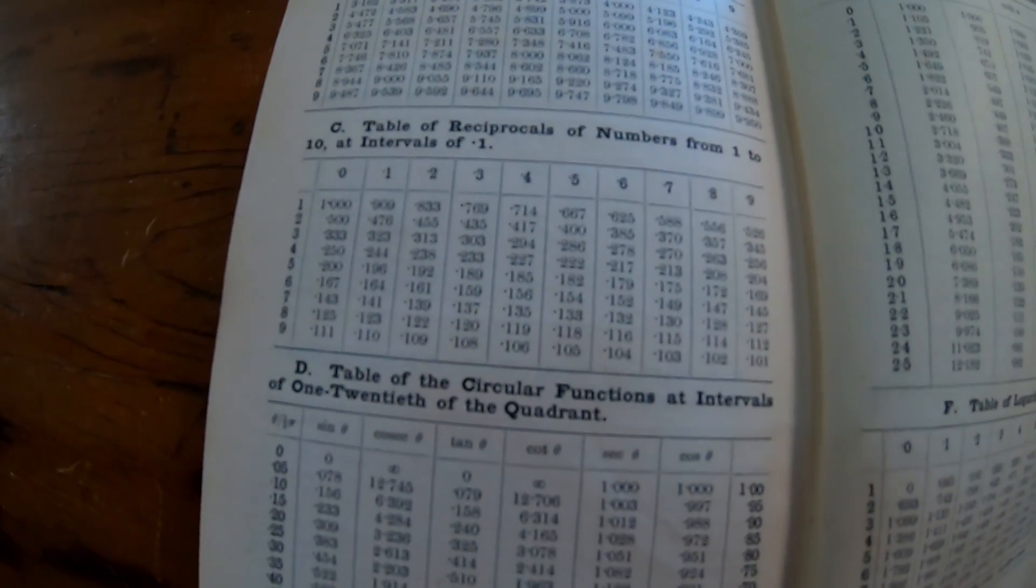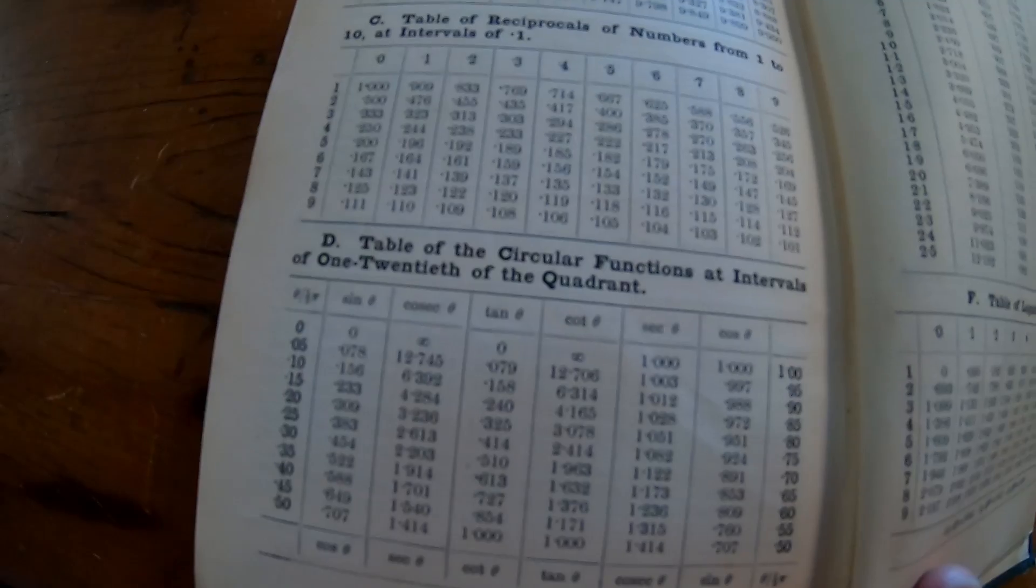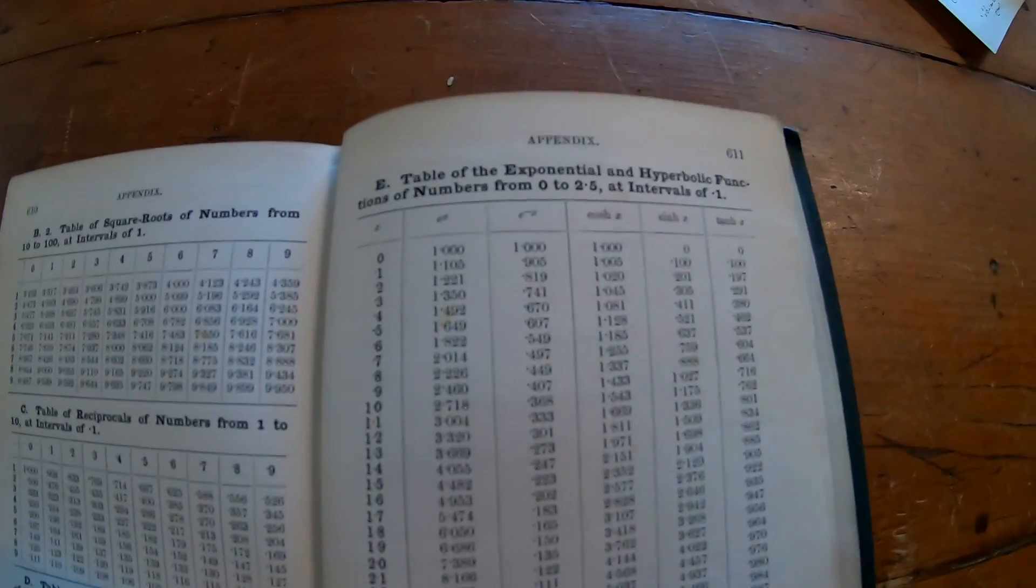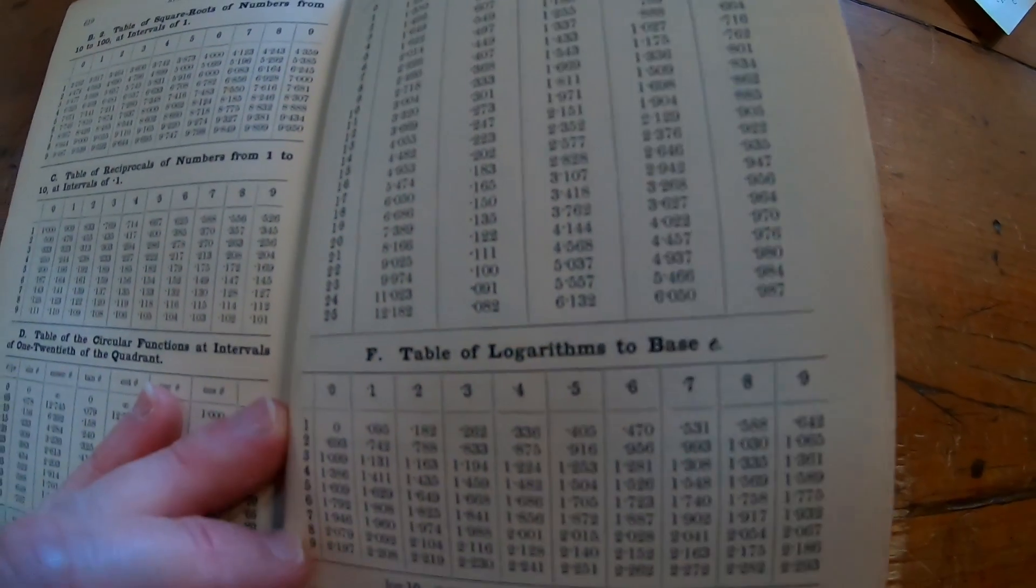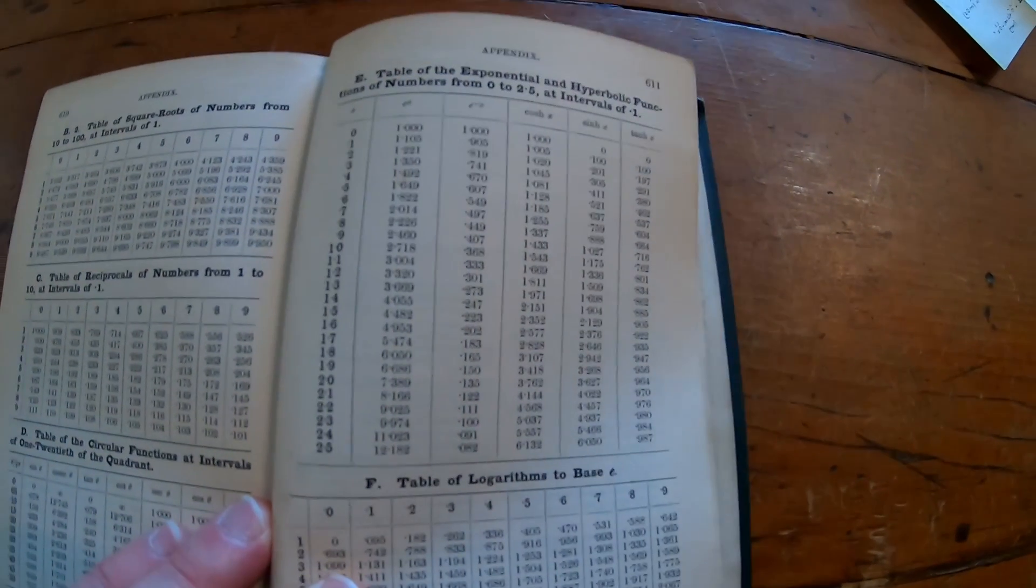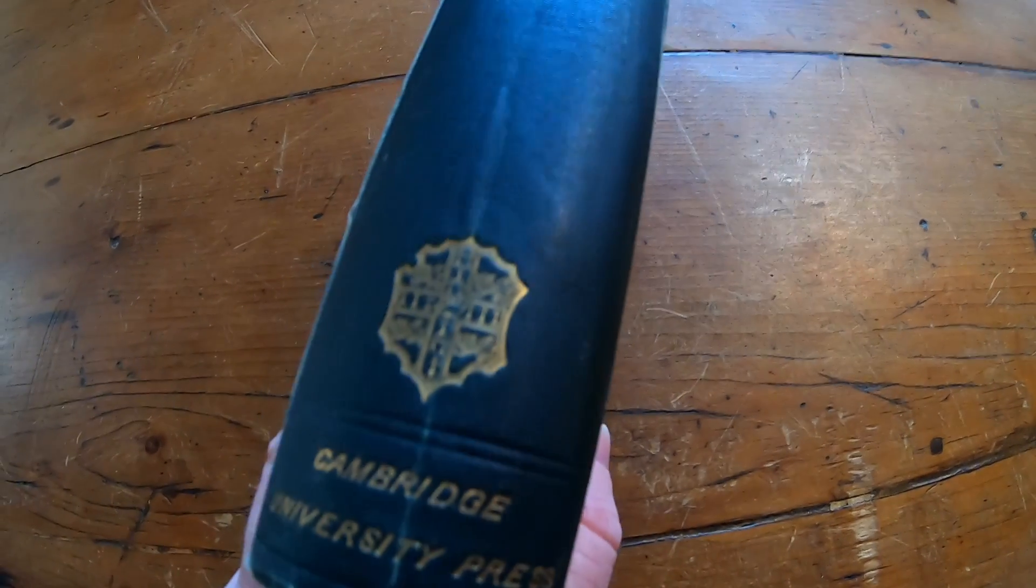Here's some more tables of numbers. Really interesting. I haven't really spent any time examining these, but really cool just to see how things were done before calculators. Again, the book is infinitesimal calculus and this is the one by Lamb. And this is a classic book.